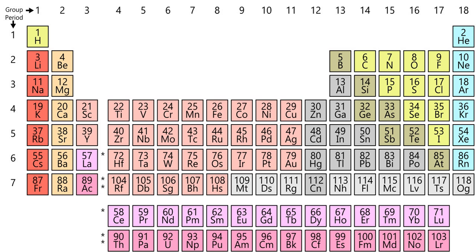The number of possible elements is not known. A very early suggestion made by Elliott Adams in 1911, based on the arrangement of elements in each horizontal periodic table row, was that elements of atomic weight greater than approximately 256 did not exist. A higher, more recent estimate is that the periodic table may end soon after the island of stability, which is expected to center around element 126, as the extension of the periodic and nuclides tables is restricted by proton and neutron drip lines. Other predictions of an end to the periodic table include at element 128 by John Emsley, at element 137 by Richard Feynman, and at element 155 by Albert Causin.